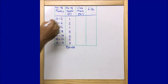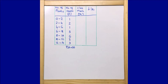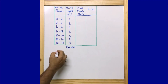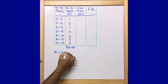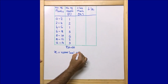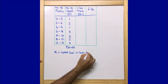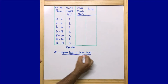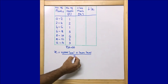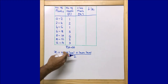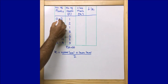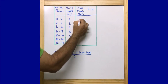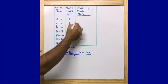First, let us find the class mark. The class mark xᵢ is equal to (upper level + lower level) divided by 2. Keeping this in mind, let us find the class marks. For the first interval: (2 + 0) / 2 = 1. Similarly, (4 + 2) / 2 = 3. And (6 + 4) / 2 = 5.